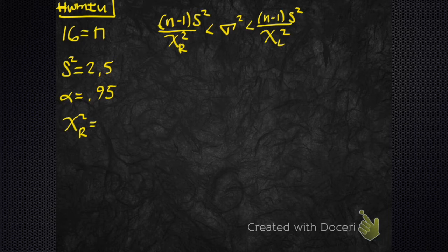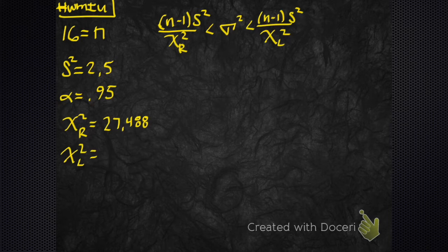What was that? Chi-right was 27.4888. Where are we getting these? We're getting these from our table. We just did that. If this ever hits the internet maybe I'll remember to put a link.